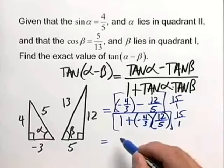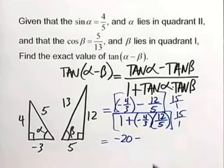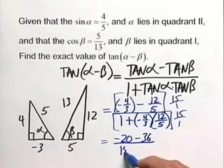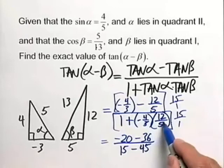Fifteen times four-thirds will give us a negative twenty, minus fifteen times our twelve-fifths will give us a negative thirty-six. All over in the denominator here, don't forget about that one, we've got to take our fifteen times that, minus here, forty-eight. In this case, the fifteen will cancel out with those denominators.